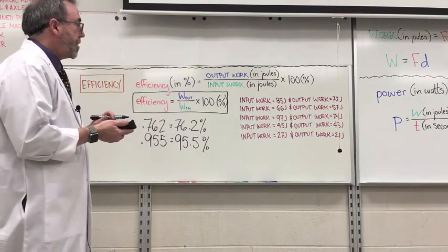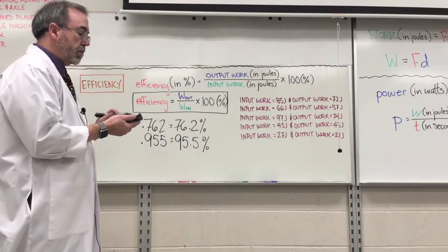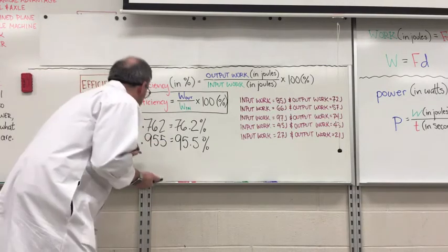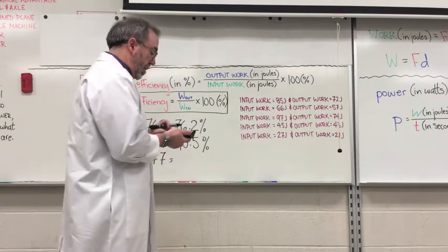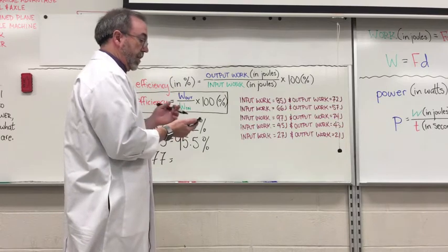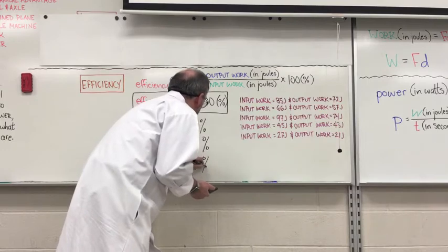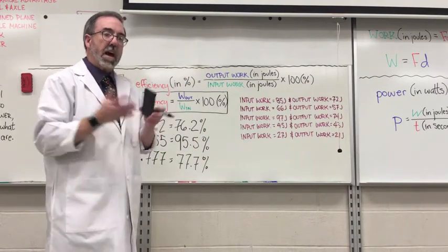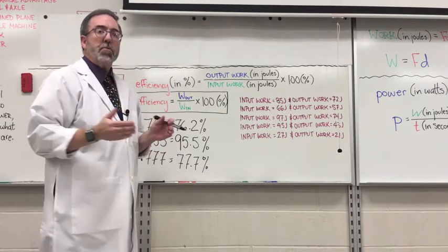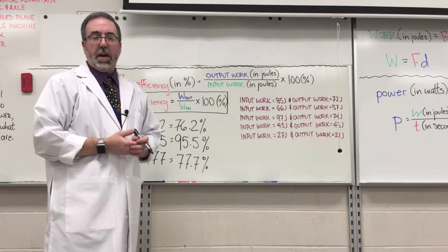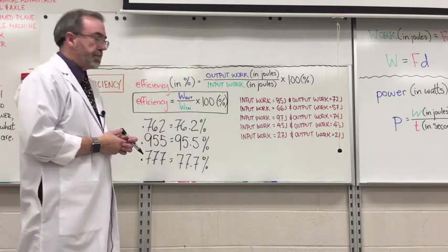Last one. 21 divided by 27 equals 0.777. Multiply it by 100. I don't know why I'm using the calculator, it's obvious. So it's 77.7%. But I use the calculator for each one of them just like I expect you to use the calculator for each of them. Even though you might know it, double check it with the calculator because you don't want to get a wrong answer. Mistakes happen, I understand that.